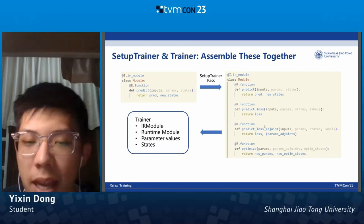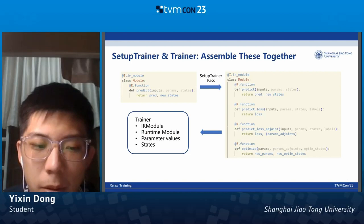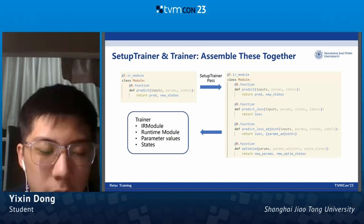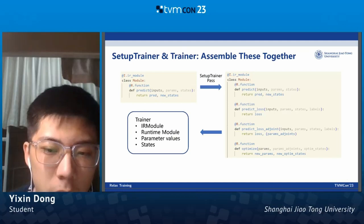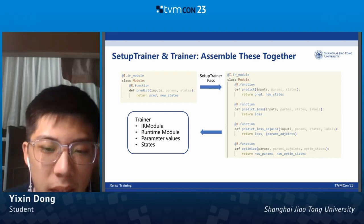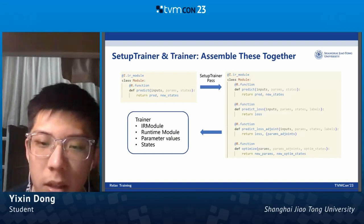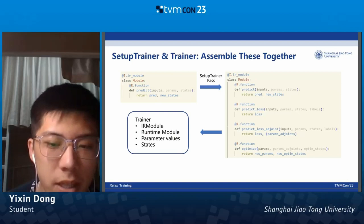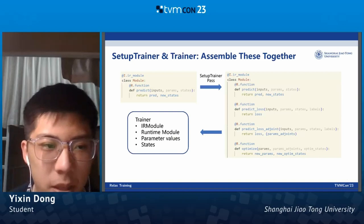After the setup_trainer path, you can get a complete IR module. You can also export the IR module and then deploy it somewhere. The trainer is a different concept from the setup_trainer path — a trainer is a runtime concept. The trainer takes in a complete IR module and helps you run it. It maintains the parameter and model states inside, so you only have to provide input instances and labels in the format of TVM ND array or NumPy array. The trainer class will help you do inference or update the parameters and model states.